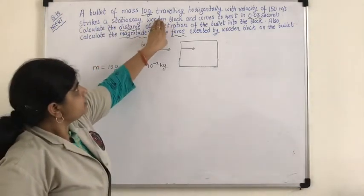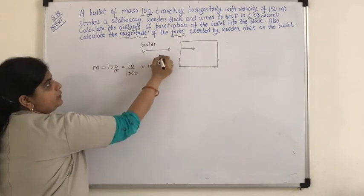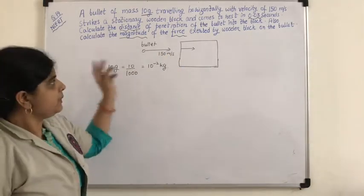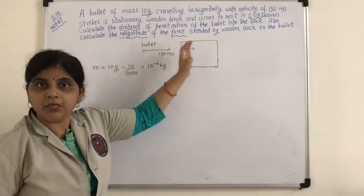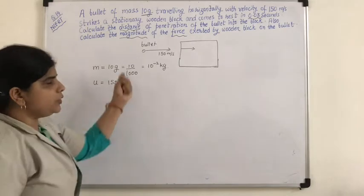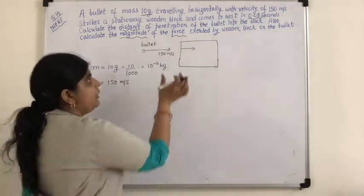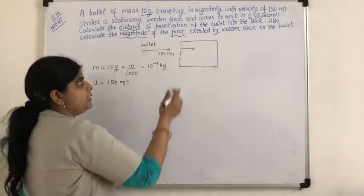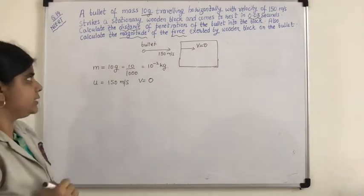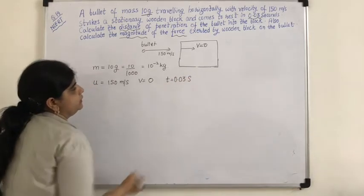The wooden block comes to rest in 0.03 seconds. A bullet is moving with a speed of 150 meters per second, so when it enters the wooden block, what is its initial speed? Its initial speed will be 150 meters per second, so U is 150 m/s. After 0.03 seconds it comes to rest, so V is 0. Final velocity of the bullet is 0, and time T is 0.03 seconds.